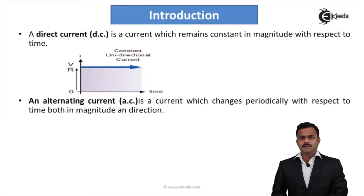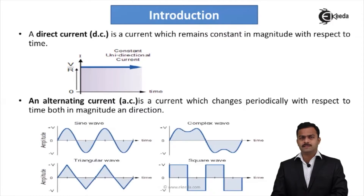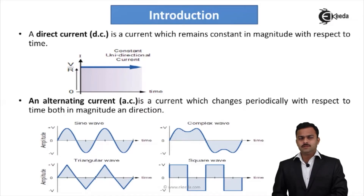AC supply is a current which is changing periodically with respect to time, both in magnitude and direction. If we plot this, I have drawn four waveforms: one sinusoidal, another triangular, one complex waveform, and one rectangular or square waveform — because not necessarily all the time we have a defined manner.